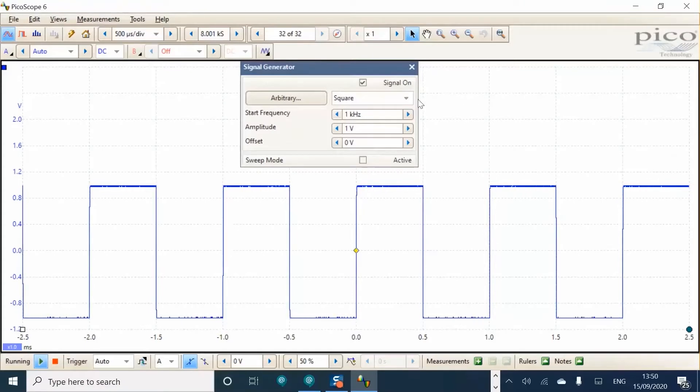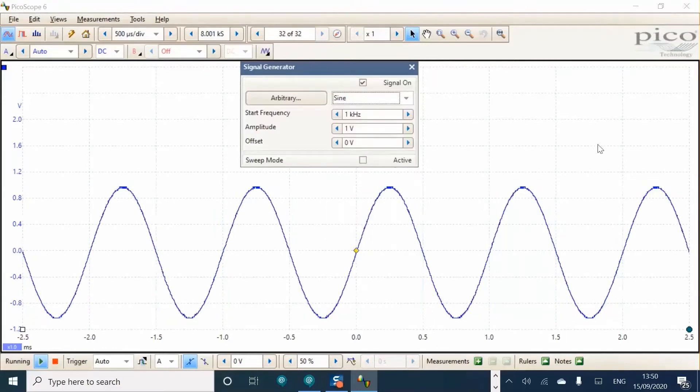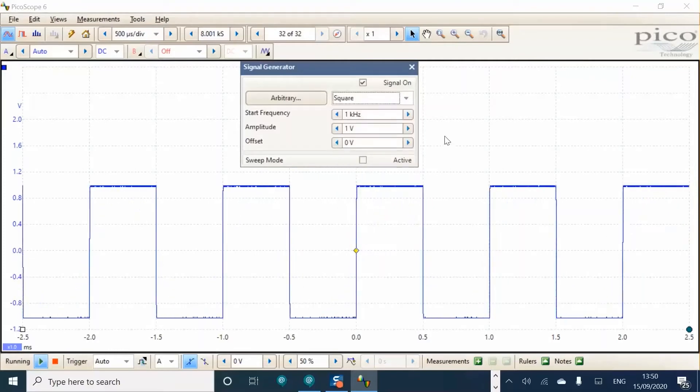Next, select the drop down menu to show the various wave types. Top of the list is arbitrary, which we'll look at shortly. Then we have sine, square, triangle,